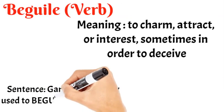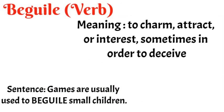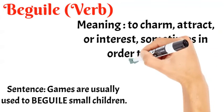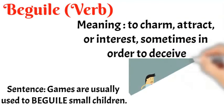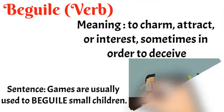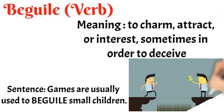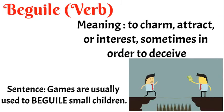Example sentence: 'Games are usually used to beguile small children.' Games kehlete hain na chhote bacchon ke saath, unhe khush karne, behlane, fuslane ke liye — that is what beguile means. This word is used in a negative sense.